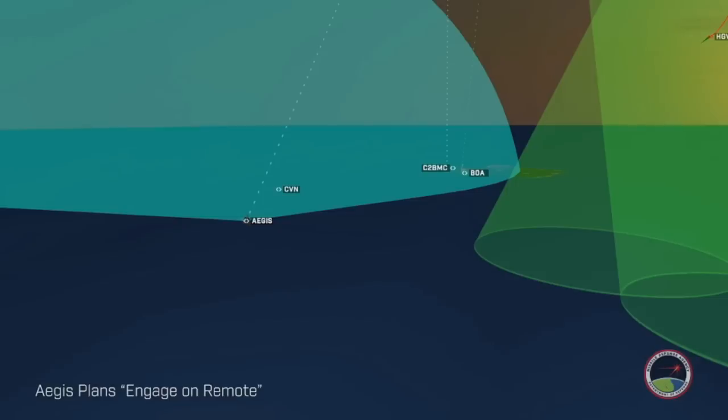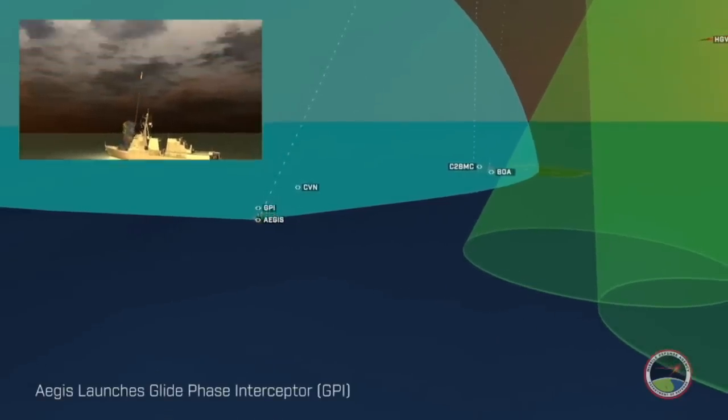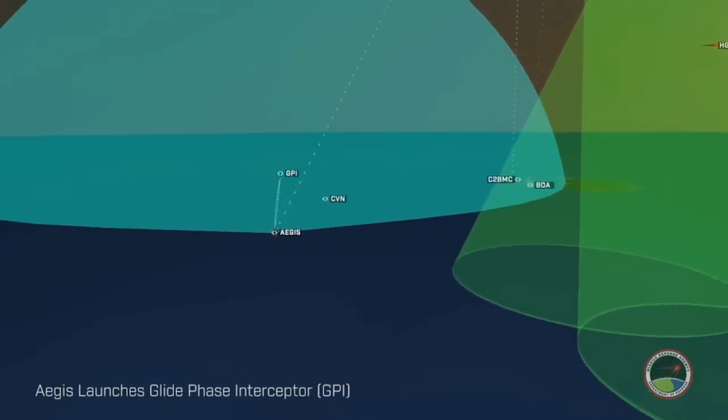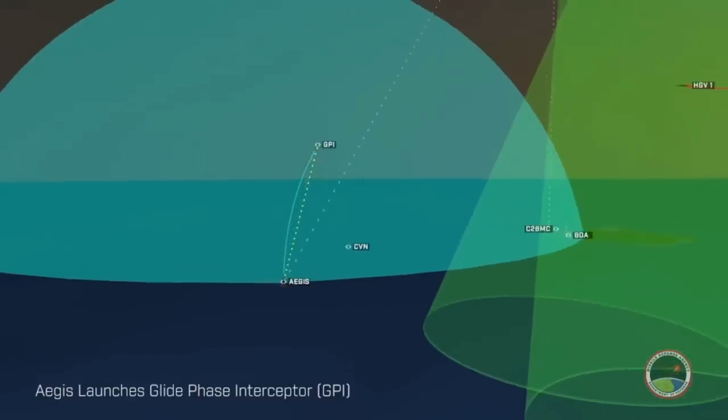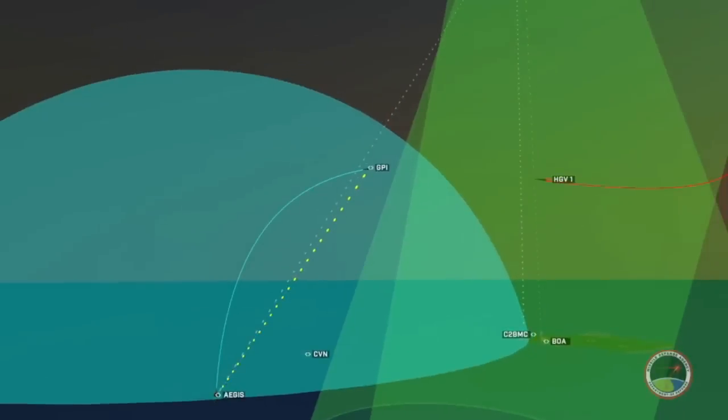Cleared for the engage on remote defense, the Aegis Destroyer launches the glide phase interceptor. A glide phase interceptor, or GPI, is capable of engaging hypersonic glide vehicles in the glide portion of flight and over matching the speed and agility of hypersonic threats.